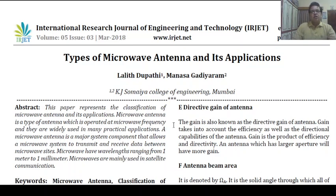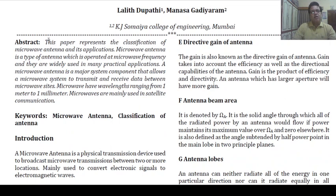Let us start. Types of microwave antennas and their applications — microwave antenna classification and their applications. The paper first gives an abstract explaining the essence of the paper. A microwave antenna is a type of antenna operated at microwave frequency, widely used in many practical applications. It is a major system component that allows a microwave system to transmit and receive data between microwave sites. Microwaves have wavelengths ranging from 1 meter to 1 mm and are mainly used in satellite communications.